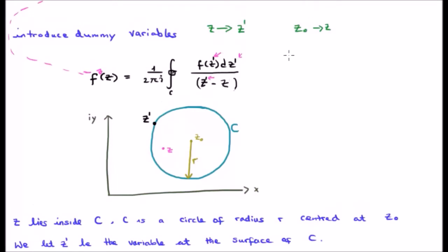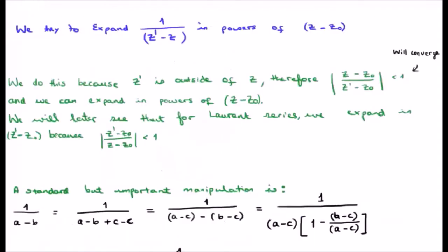Finally, look at the denominator. The denominator is 1 over Z' minus Z. This is important. We try to expand 1 over Z' minus Z in powers of Z minus Z0, not Z'.